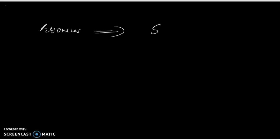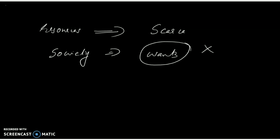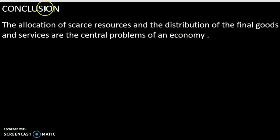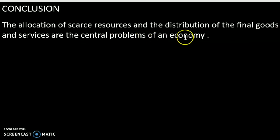Resources are the source of skills, and they are limited. No society can satisfy all the wants of its people. The conclusion is that the allocation of resources and the distribution of final goods and services are the central problems of an economy.